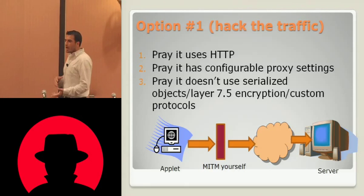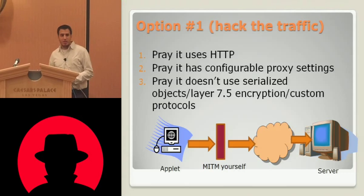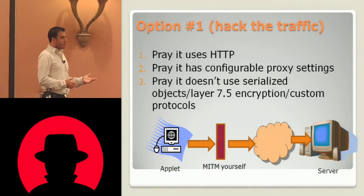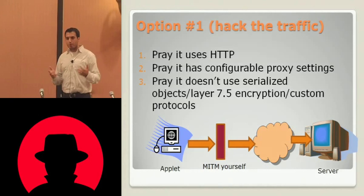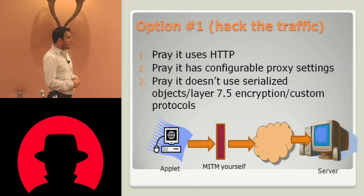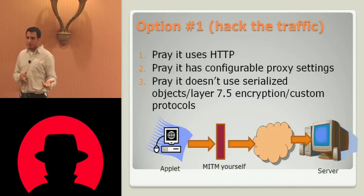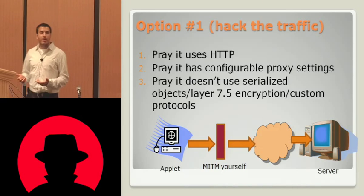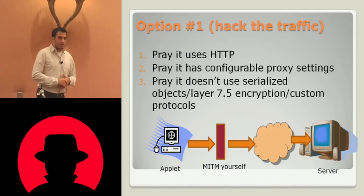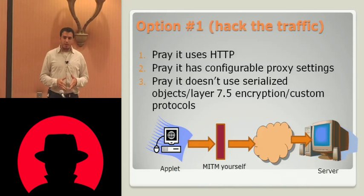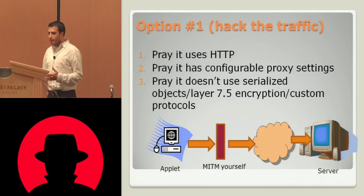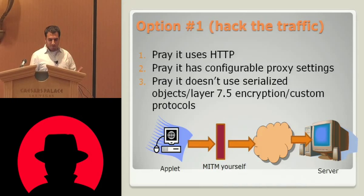On top of that, the traffic might be obfuscated in some way that, although it's theoretically possible for you to alter, in practice it isn't. For instance, if they're using serialized objects — it's possible you could write a tool, like somebody wrote a Burp plug-in that would allow you to edit a serialized object across the wire — but in general it's kind of hard. If they use their own kind of encryption on top of that, it's going to be hard to proxy and alter that traffic. And if they have a custom protocol and you only have 40 hours, by the time you're done reversing the protocol to make meaningful tests, you're out of time. So this option just doesn't work on its own.